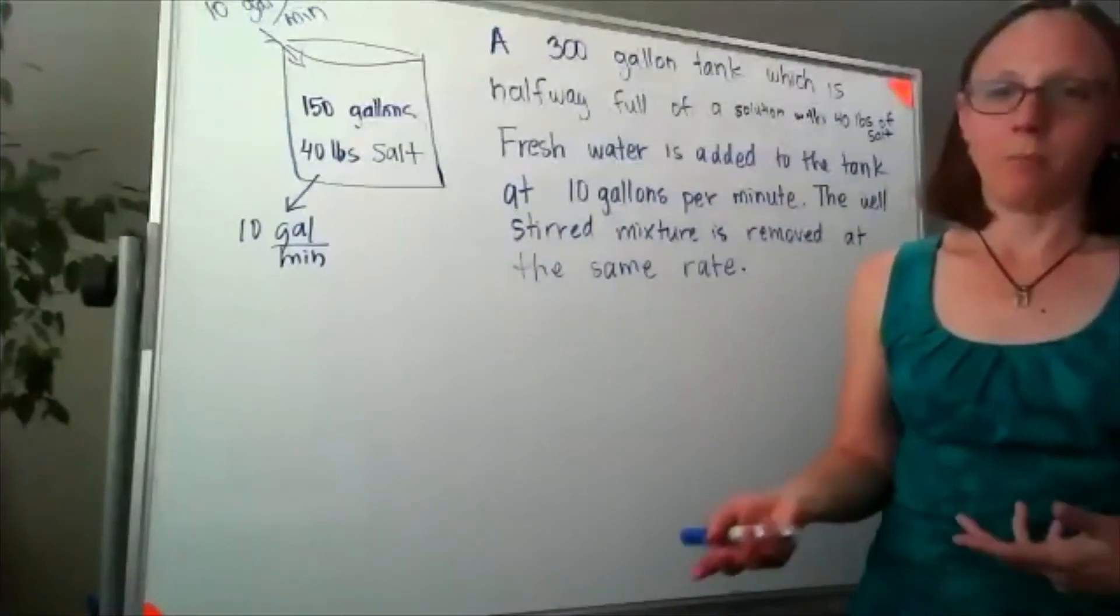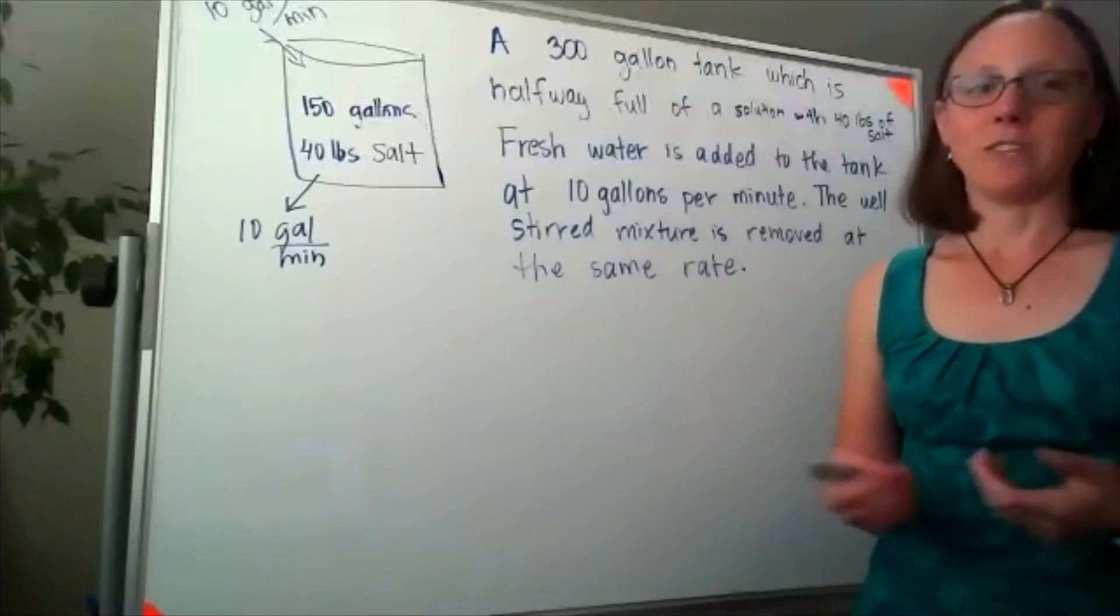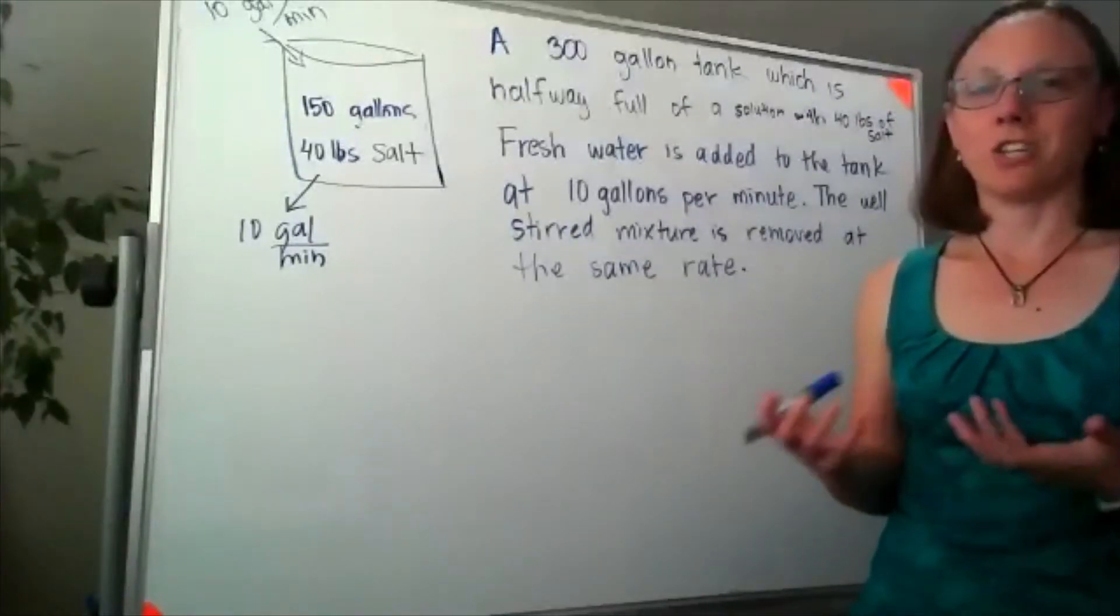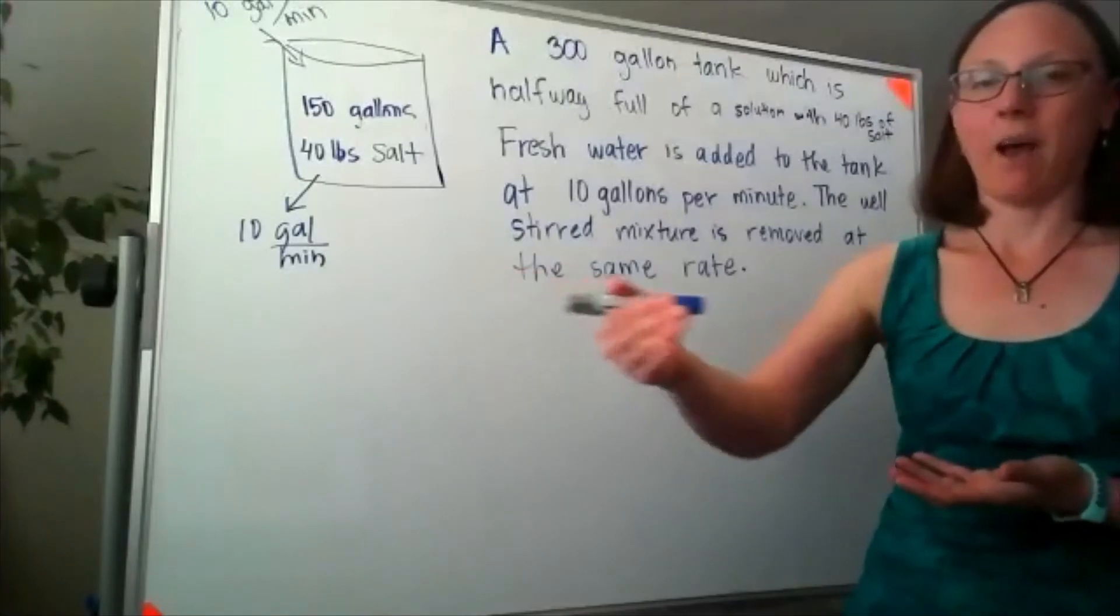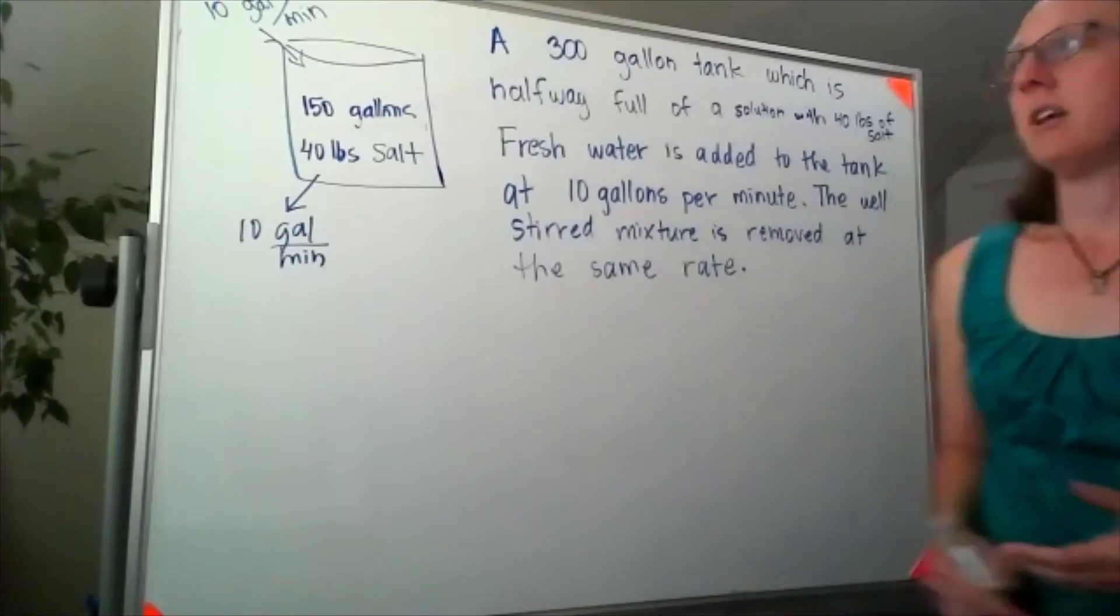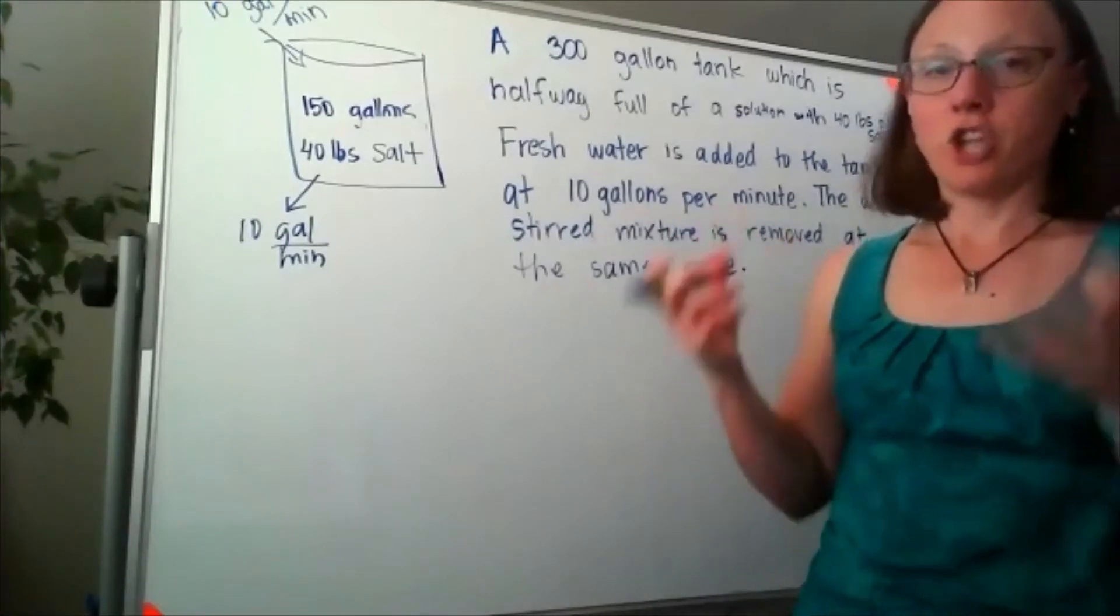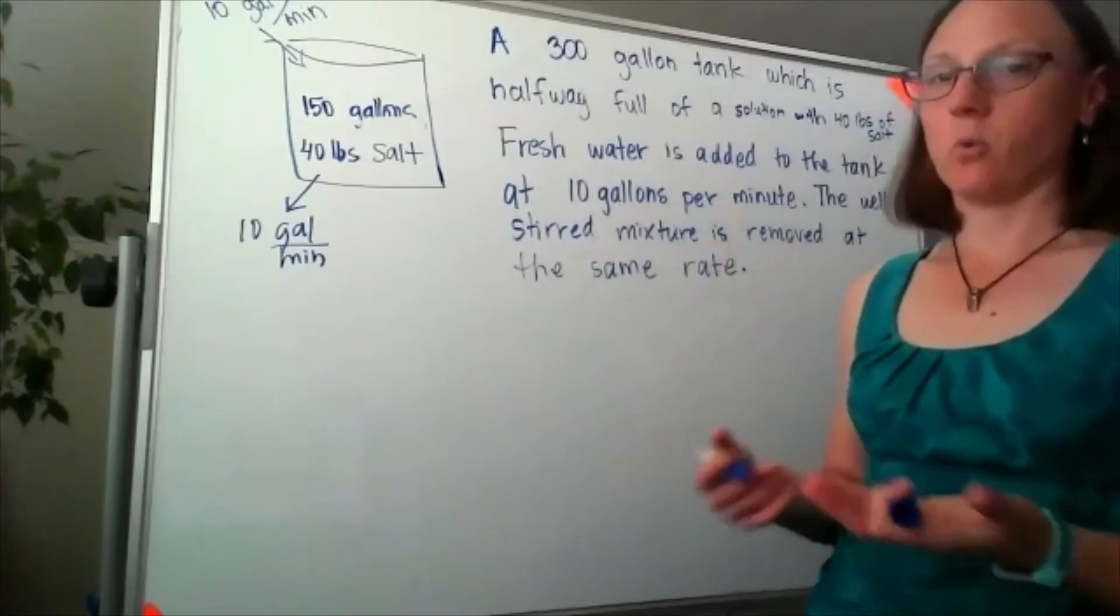And I'd say, how'd you get that? And you'd say, well, we figure out how much the change is by taking how many people came in and subtracting how many people left. We're going to do that same thing, only our change is a rate of change, or a differential.